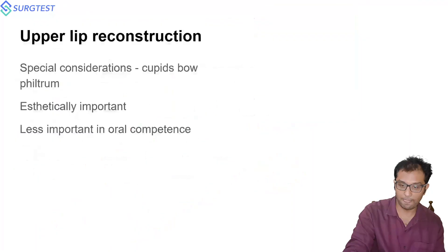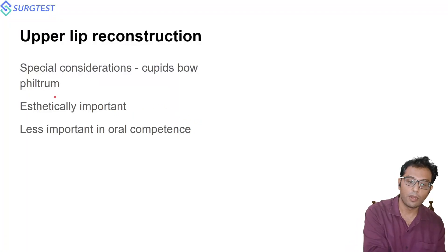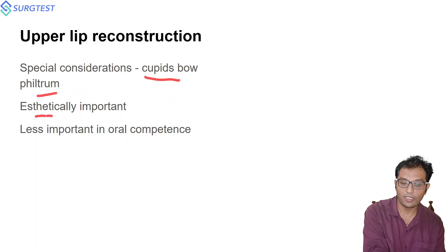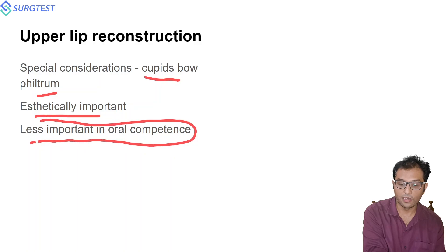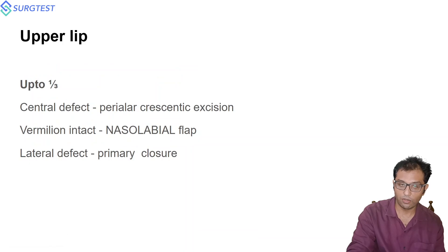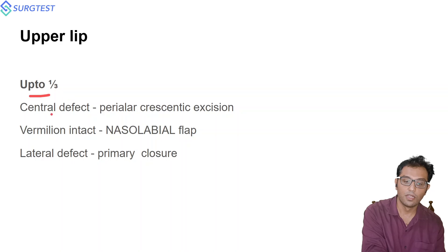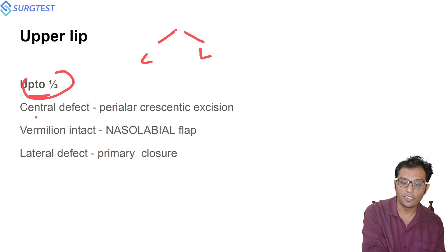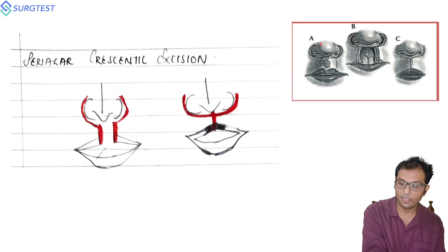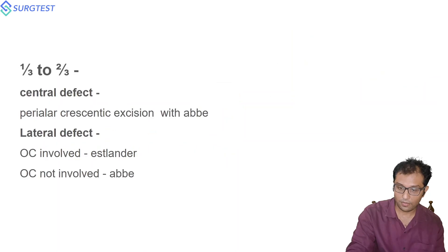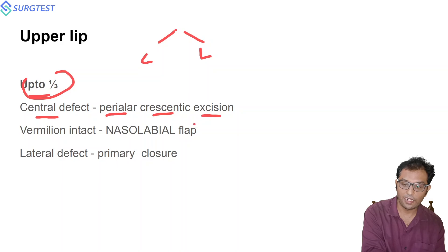Now coming to upper lip reconstruction. The special consideration is the Cupid's bow — it is more aesthetically important and less important for oral competence. Upper lip defects are classified into central and lateral defects. For up to one-third of a central defect, a perialar crescentic excision can be used — release incisions are given around the nasal alar to allow mobilization and closure of the defect.